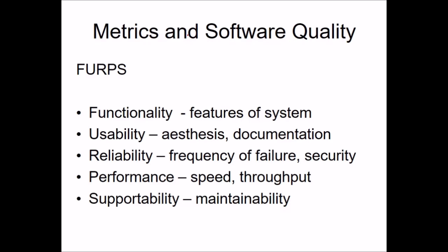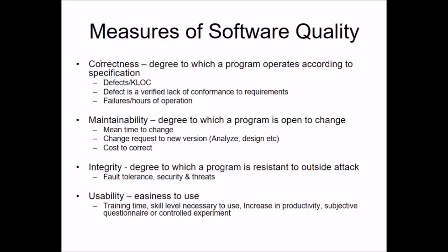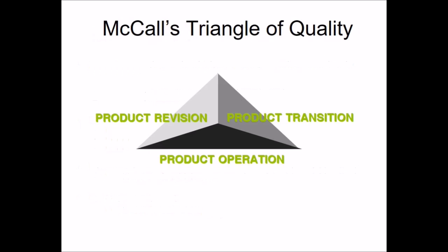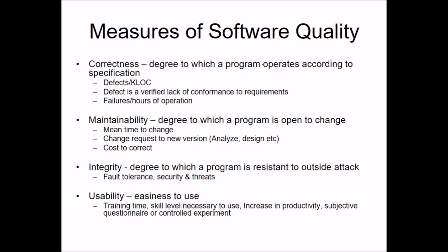Metrics and software quality are very much related. If we talk about software quality from a metrics perspective: functionality covers the features of the system; usability covers aesthetic sense and documentation; reliability covers frequency of failure and security; performance covers speed and throughput; and supportability covers maintainability. Measures of software quality include correctness, maintainability, integrity, and usability. Correctness is the degree to which a program operates according to its specification.